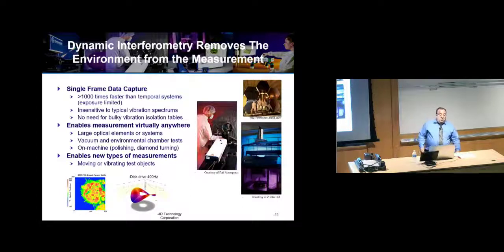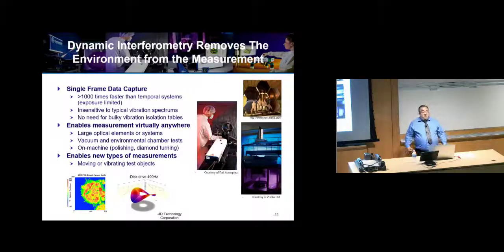But dynamic interferometry, the whole purpose is to remove the environment from the measurement as much as possible. The goal is single frame data capture. Then you're really only limited in terms of what the environment's doing by the pulse or the exposure time of the camera. You can get more than a thousand times faster than temporal systems if you have a high-powered source, a good camera. You become insensitive to typical vibration sources and no need for isolation tables. It allows measurement virtually anywhere and we'll see some different situations there.